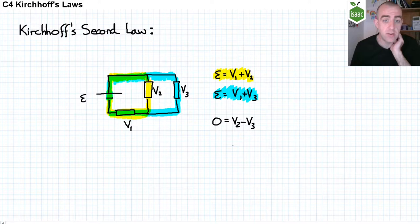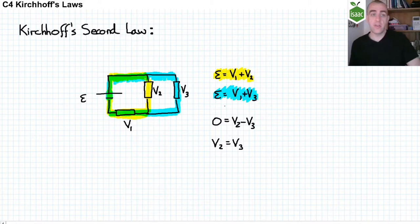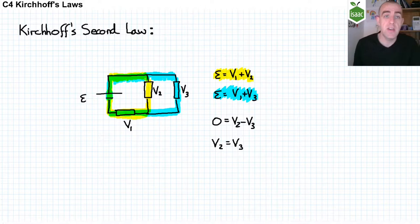The consequence of Kirchhoff's second law is that components in parallel have the same potential difference across them. But components in series share the potential difference between them.